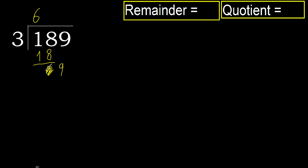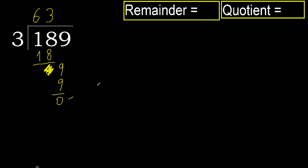Eliminate 0 on this side. Bring down 9. 3 multiplied by 4 is greater; multiply by 3 is 9. 9 minus 9 is 0. Next — no number remaining, therefore finish.